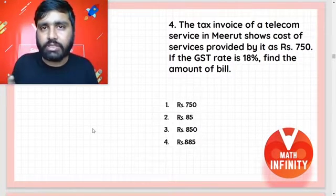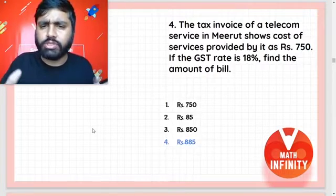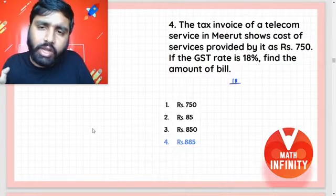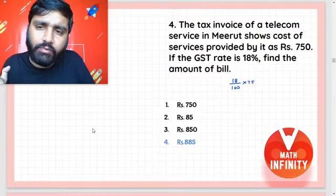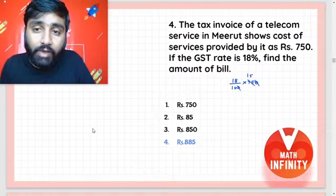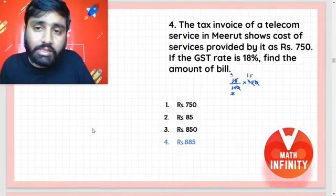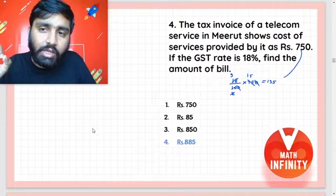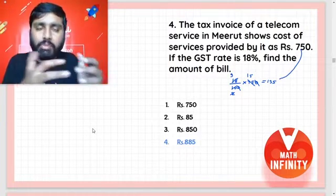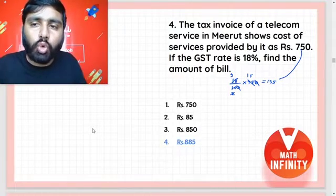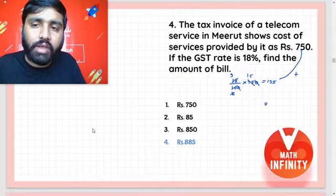This is an interstate service, so you will call it interstate only. The GST rate is 18%. To find total GST: 18 upon 100 multiplied by 750. After cancellation, 5 times 15 and 5 times 2 gives us ₹135 as total GST. Now you add ₹750 as your service amount plus ₹135 GST, which gives a total billing amount of ₹885.